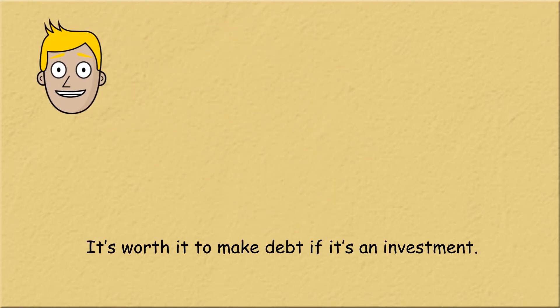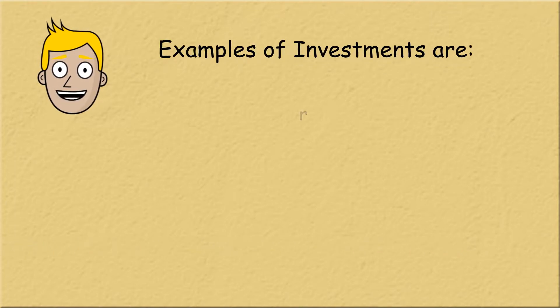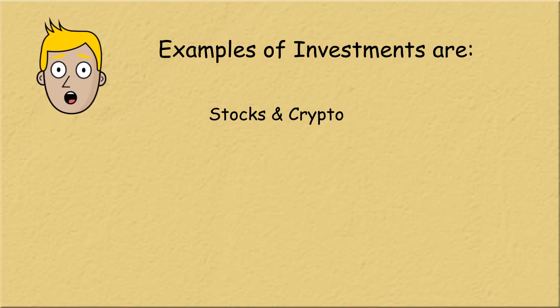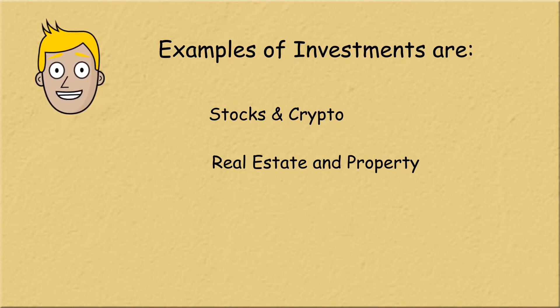There are many things that can be considered investments. You can invest money into stocks and cryptocurrencies in the hopes that the values go up in the long term and make you money. You can invest money into property and rent it out to pay for the mortgage and eventually earn an income from it with the possibility of selling the property for a profit later as well.